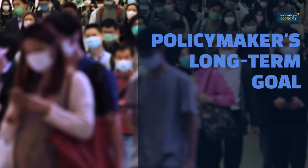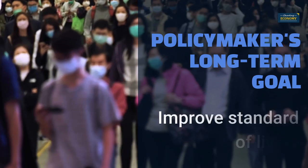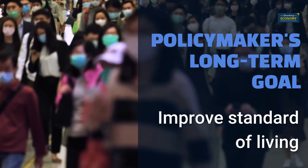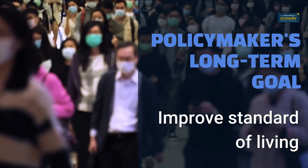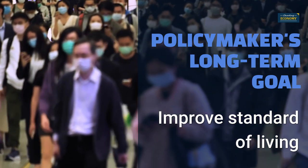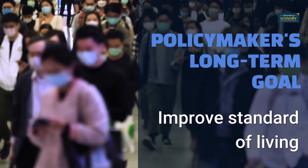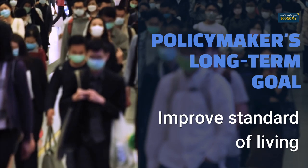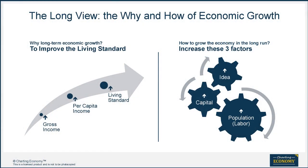To understand the economy, we have to know the objective. Economic policymakers' long-term goal is to improve the country's standard of living and its population's well-being. Without economic growth, the standard of living does not improve, as had been the case in most countries before the Industrial Revolution. So, how do you make the economy grow in the long run? A simple formula for long-term economic growth dictates that you have to increase these three factors: labor, capital, and idea. That's the job of policymakers.